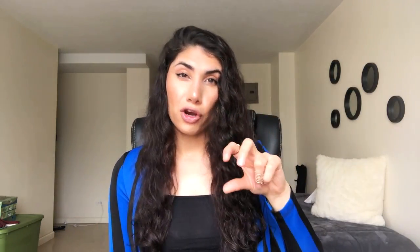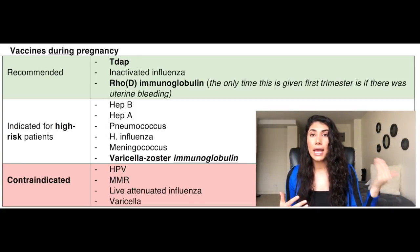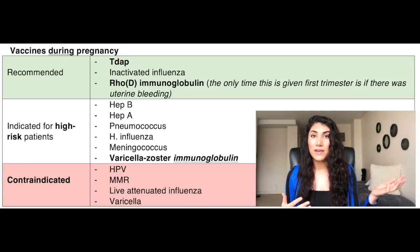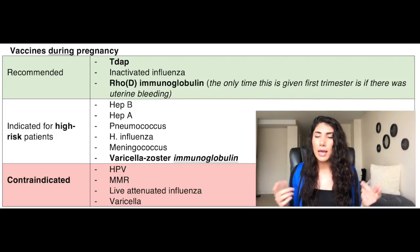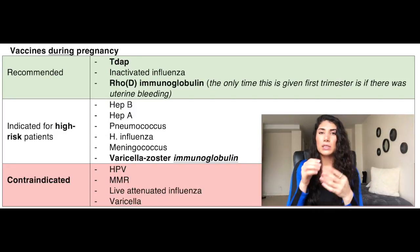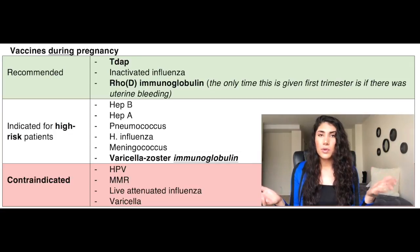Definitely know your preeclampsia, eclampsia, and HELLP. With preeclampsia, there's mild and there's severe — recognize what makes it severe. When do you give vaccinations? For example, hepatitis B and A — you give these vaccines in someone that has chronic hepatitis C. But you're not going to give MMR and varicella. MMR and varicella are contraindicated because they're live attenuated vaccines — all four live attenuated vaccines are contraindicated.